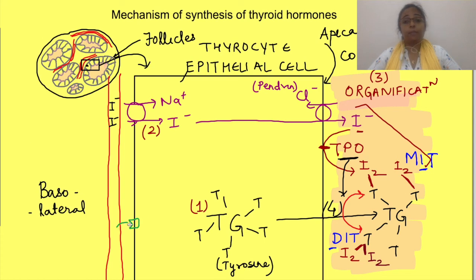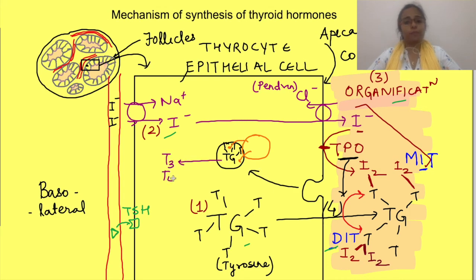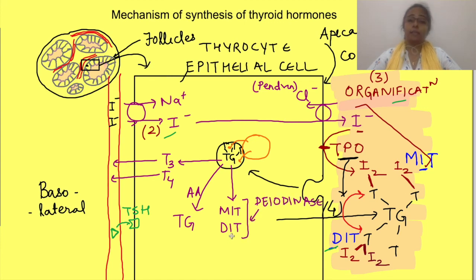When the gland is stimulated by thyroid stimulating hormone (TSH) from the pituitary, all steps of synthesis — synthesis of thyroglobulin, uptake of iodide, organification, and coupling reaction — are stimulated. Follicular cells then take up the stored iodinated thyroglobulin from the colloid by endocytosis. Lysosomes fuse with the phagocytosed thyroglobulin and cleave T3 and T4 from thyroglobulin via proteases, which are then released from the basolateral site into circulation. These proteases also separate amino acids, which are reused to produce thyroglobulin. The MIT and DIT that are not coupled are acted upon by the enzyme deiodinase, which detaches iodine from tyrosine — both of which are then recycled.